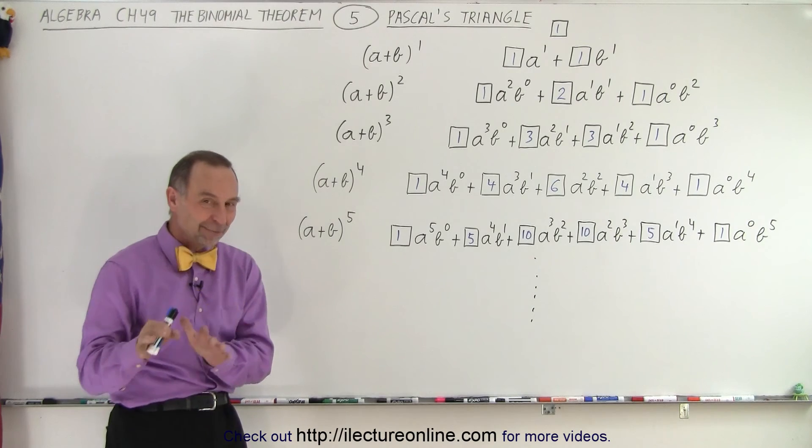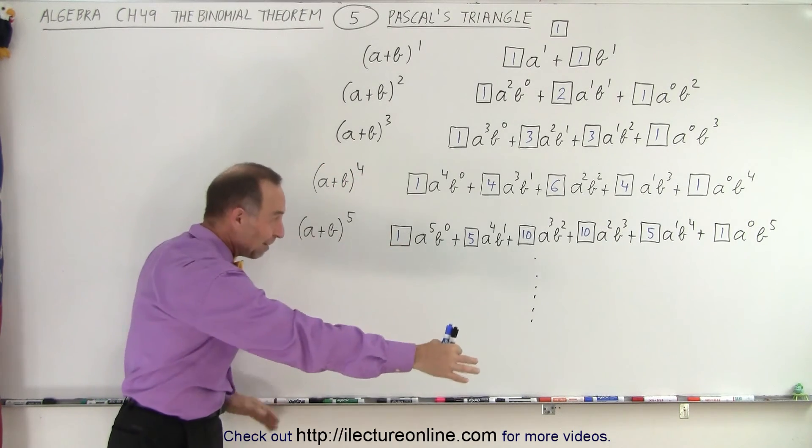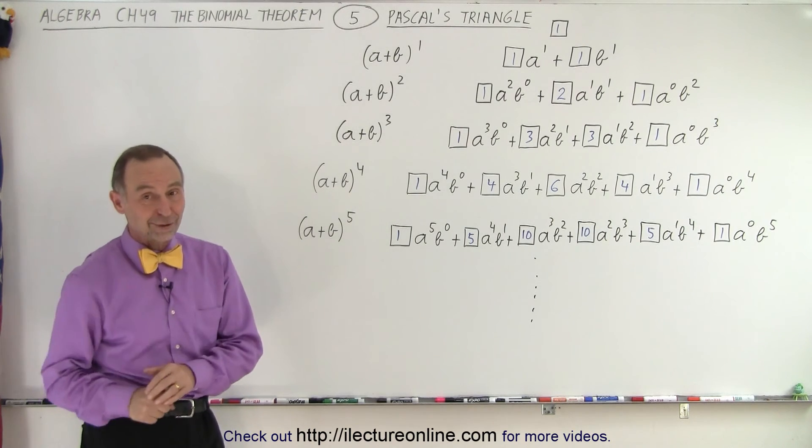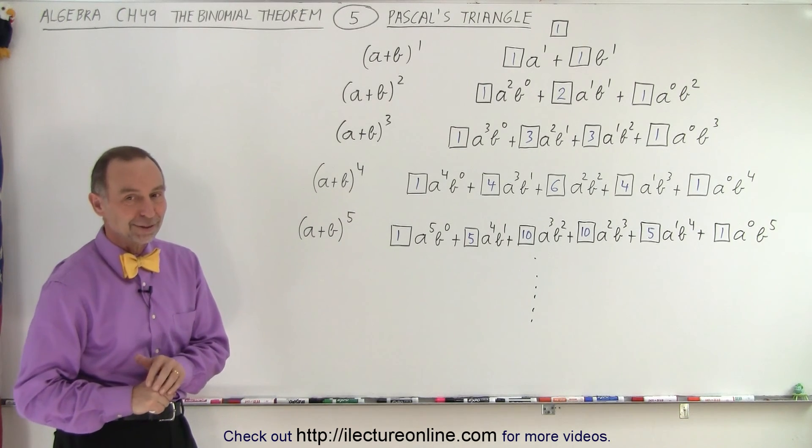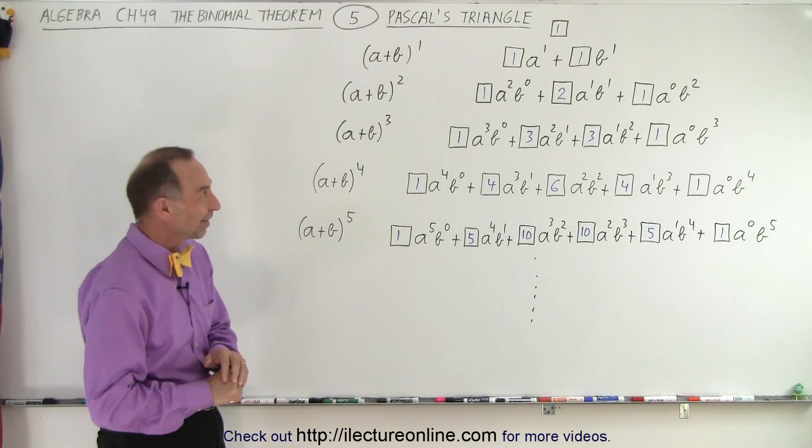And so we will show you some of those other techniques. None of them are quite that simple, but there are ways we can shortcut it so you don't have to sit there and make the entire triangle when you have something like a plus b to the 16th power. There are other ways of obtaining those coefficients. So we'll see how that's done.